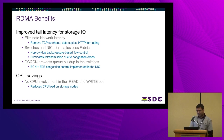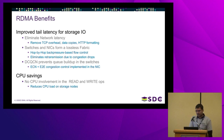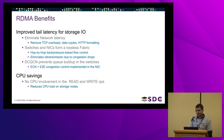We also have DCQCN — Data Center Quantized Congestion Notification — which prevents queue buildup in the switches. It uses ECN, explicit congestion notification, plus end-to-end congestion control implemented inside the NIC. And obviously we have CPU savings, so there is hardly any CPU overhead in read and write operations.